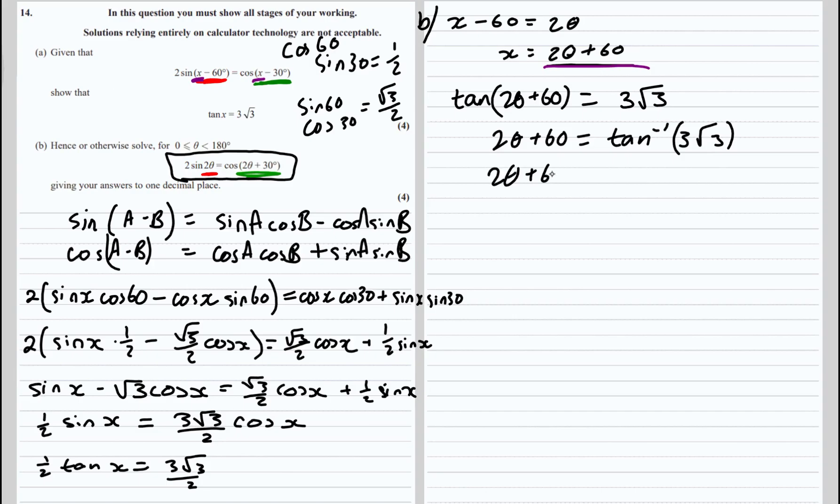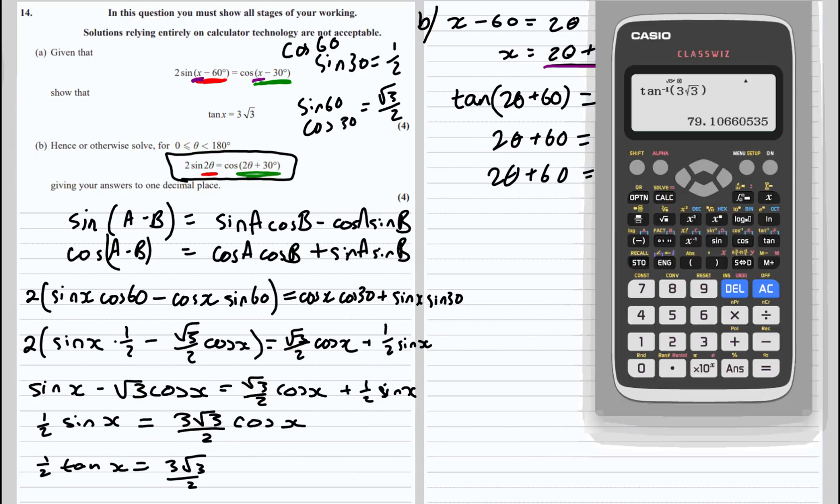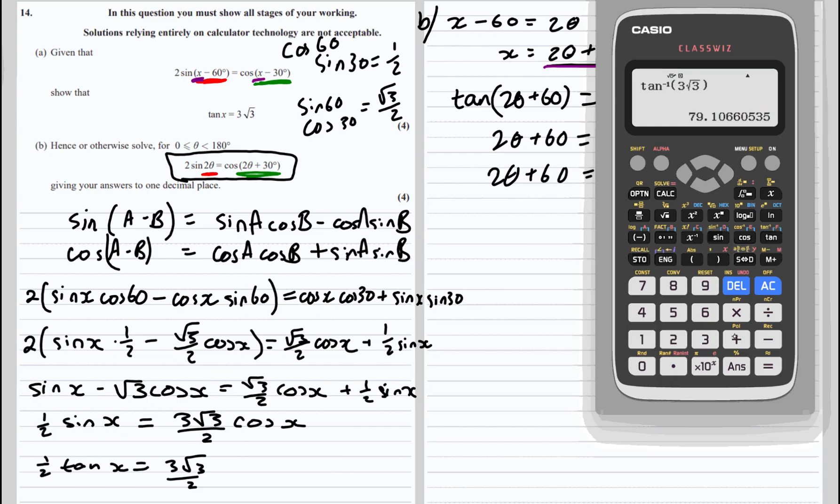So 2 theta plus 60 is equal to 79.1, and then tan just repeats every 180 degrees, so the next answer will be 259.1.